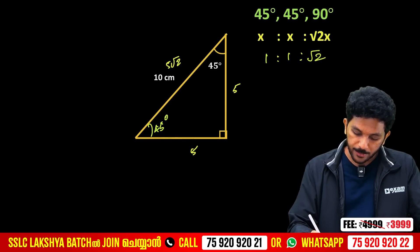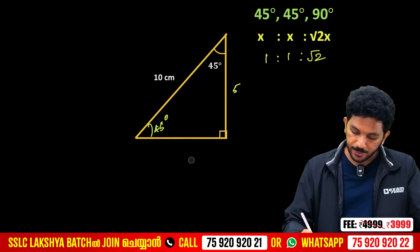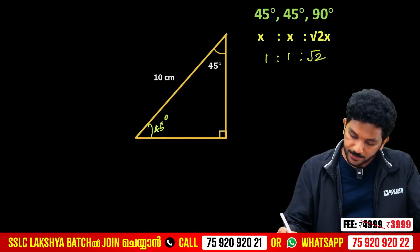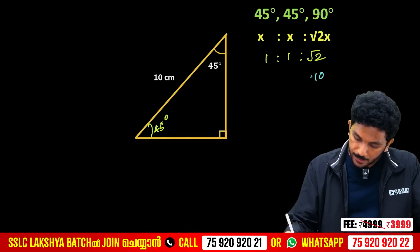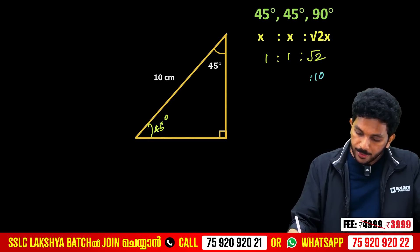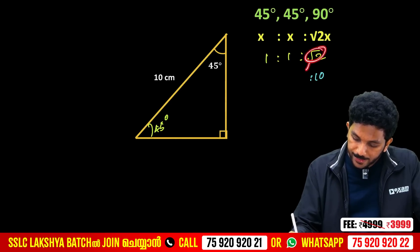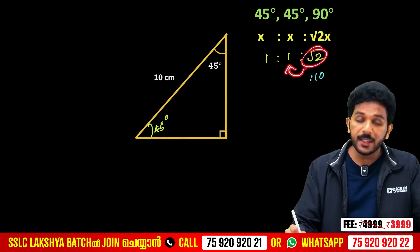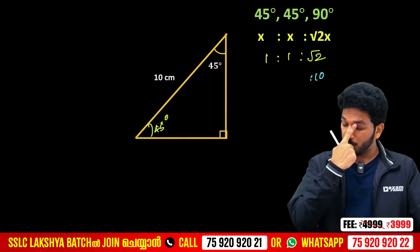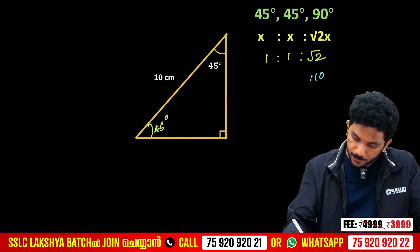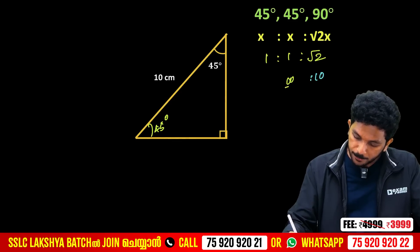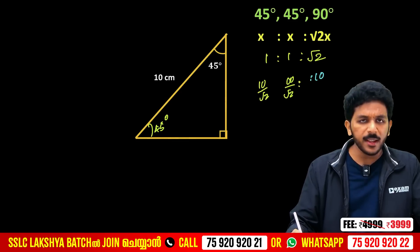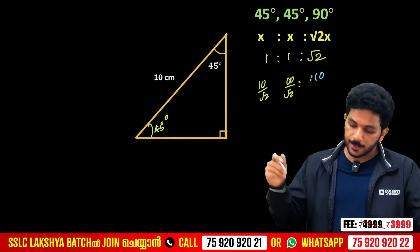We have sides 5, 5, and 5√2. Now the 90-opposite x is 10. This root 2 corresponds to 1, so we divide by root 2. The answer is 10 divided by root 2. That's the correct answer: 10 by root 2.